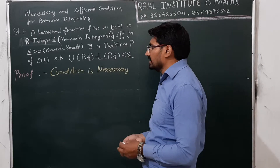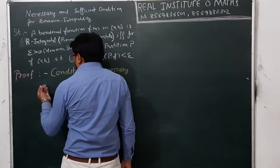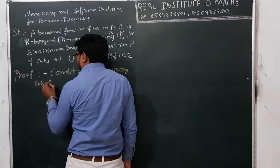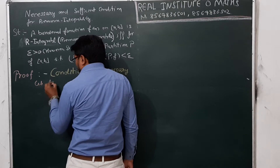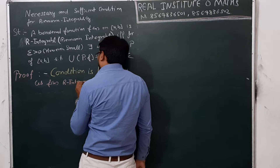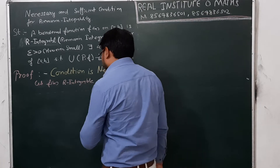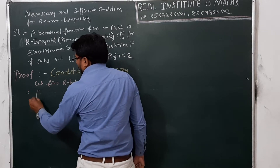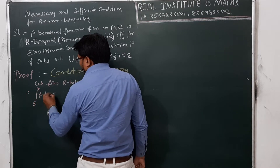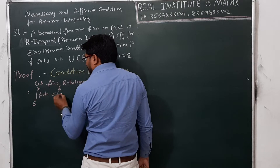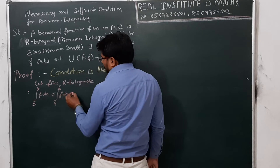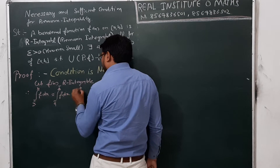The first condition is the necessary condition. First of all, let F of X be Riemann integrable on [A,B]. Therefore, by the definition of Riemann integrable, we can write that the lower Riemann integral from A to B of F dx is equal to the upper Riemann integral of F dx, and their common value is given by the integral from A to B of F dx.